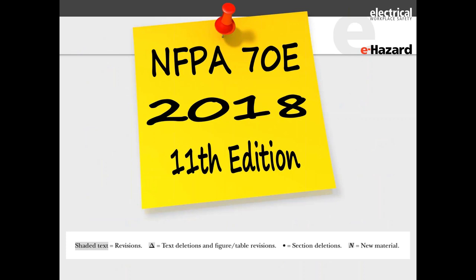NFPA 70E 2018 is the 11th edition. In the standard, shaded text indicates revisions. A shaded triangle indicates text deletions and figure or table revisions. A bullet indicates section deletions, and a shaded N indicates new material. Sometimes it is rather hard to determine what changed from 2015 to 2018, but this new nomenclature system makes it much clearer.